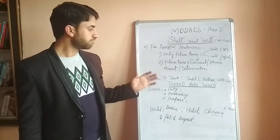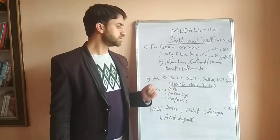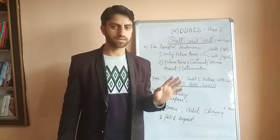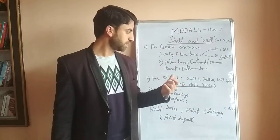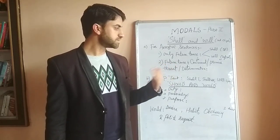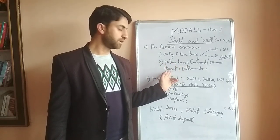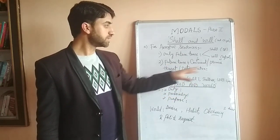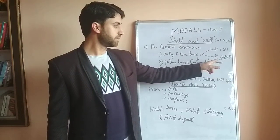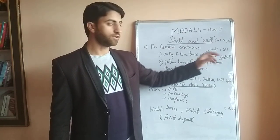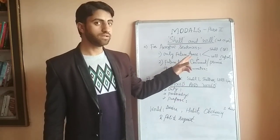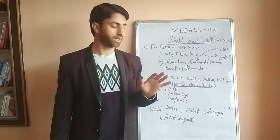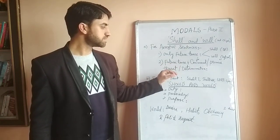Next case is when future tense plus command, promise, threat or determination is intended. Jab hamara maksab yeh ho - ek to future tense plus ya to command ya promise ya kisi ko darana ya determination. Then we make use of the reverse of it. We make use of will for the first person and shall for the second and third person. You will keep this in your mind. We are going to discuss these one by one.